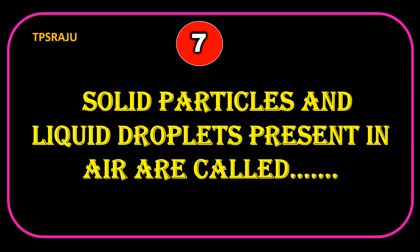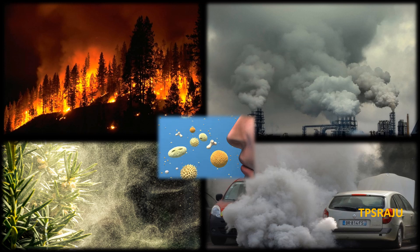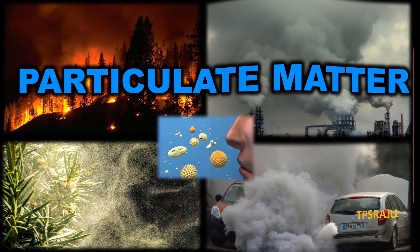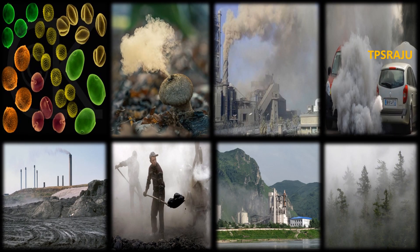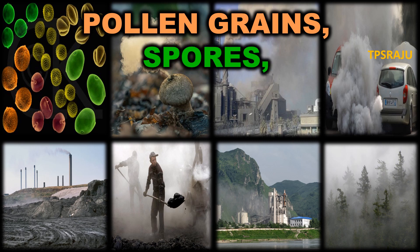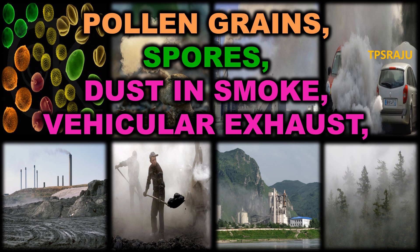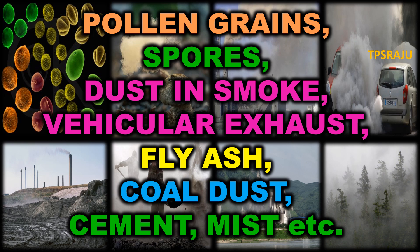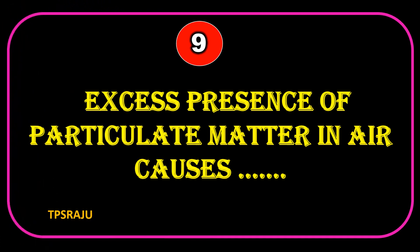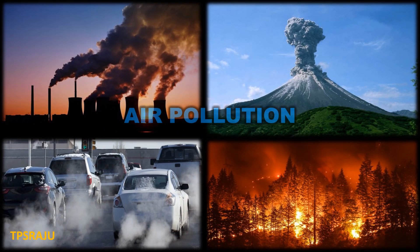Solid particles and liquid droplets present in air are called particulate matter. Examples include pollen grains, spores, dust in smoke, vehicular exhaust, fly ash, coal dust, cement, mist, etc. Excess presence of particulate matter in air causes air pollution.